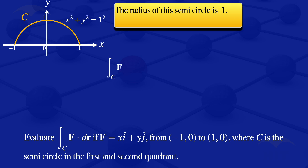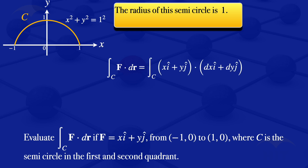For our integral of f·dr along the curve C, our vector field f is xi plus yj, and the vector dr is dxi plus dyj. So we get the integral along the curve C of (xi plus yj) dot (dxi plus dyj). Taking the dot product by multiplying corresponding elements, we get the integral along the curve C of x dx plus y dy.